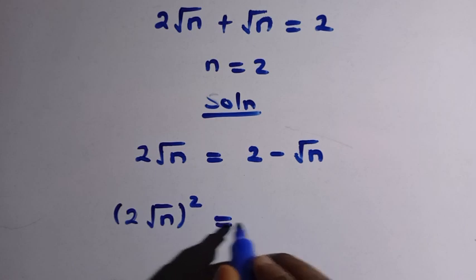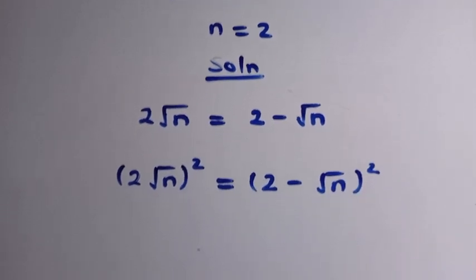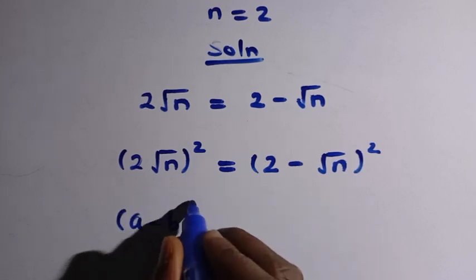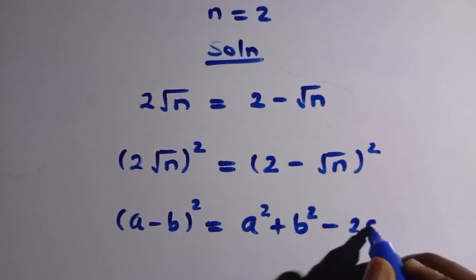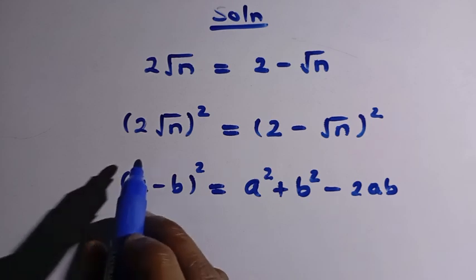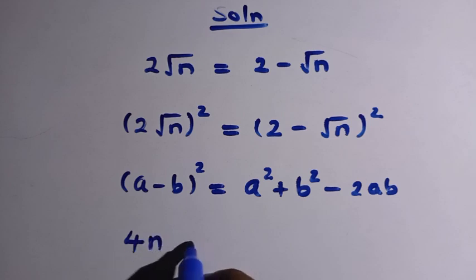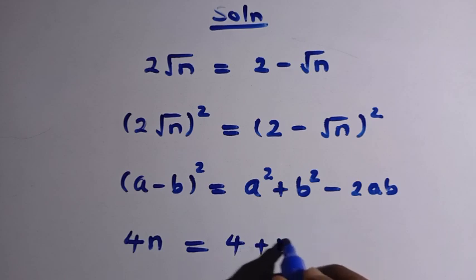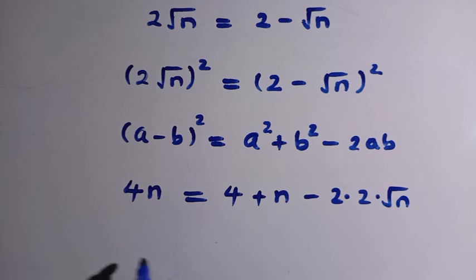We apply the identity (a - b)² = a² + b² - 2ab. Here a is 2 and b is √n. So 2 squared is 4, and (√n)² is n. The right side expands to 4 + n minus 2 times 2 times √n, giving us 4 + n minus 4√n.